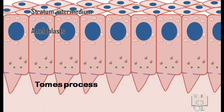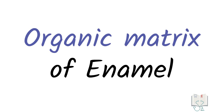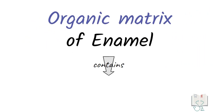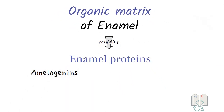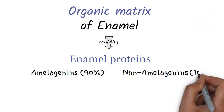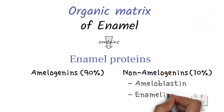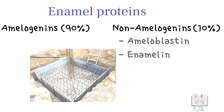The ameloblasts now start depositing the organic matter. The organic matter of enamel has no collagenous proteins; instead, it is formed of enamel proteins which are classified as amelogenins and non-amelogenins. The amelogenins are the main protein, constituting 90 percent, whereas non-amelogenins form only 10 percent of the organic matter. They include ameloblastin and enamelin. All these enamel proteins form the framework on which mineralization will take place.